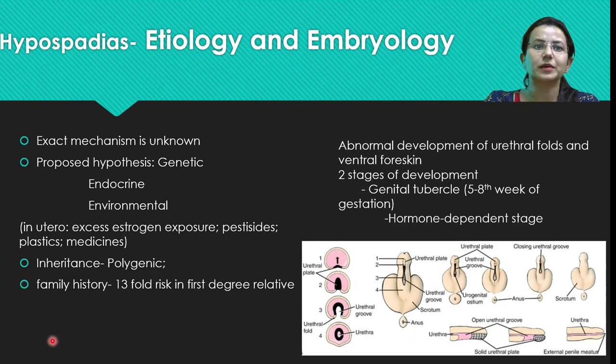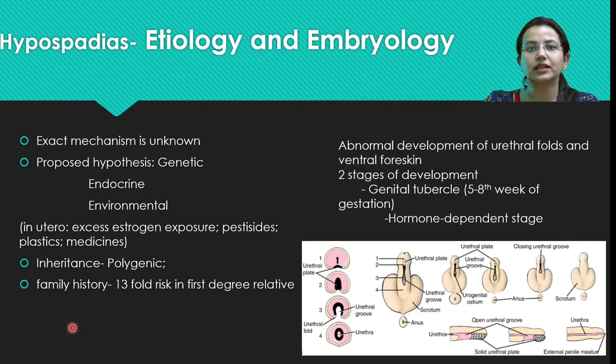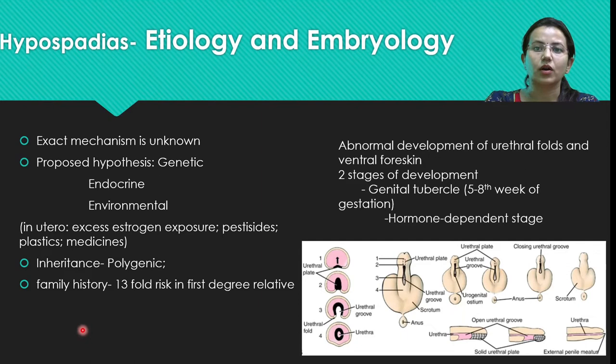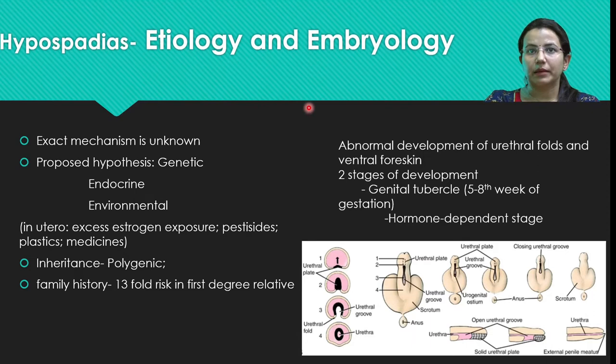Inheritance is polygenic. It has been noted that when hypospadias is present in the family or in close male relatives, the risk is higher. The risk is 13-fold when it is present in first-degree relatives. If a sibling or father has hypospadias, the chances of hypospadias increase in subsequent children.